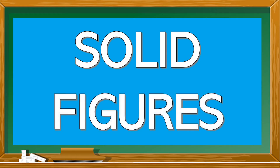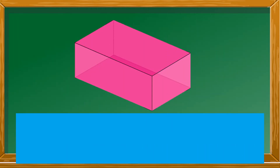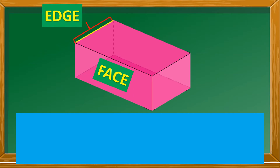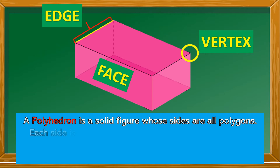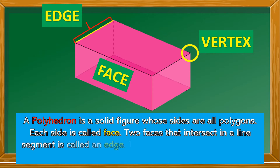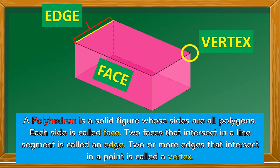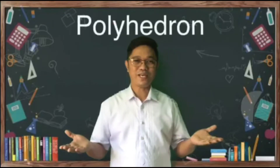Let's try to find out what the different kinds of solid figures are. A polyhedron is a solid figure whose sides are all polygons. Each side is called a face. Two faces that intersect in a line segment is called an edge. Two or more edges that intersect in a point is called a vertex. There are two kinds of polyhedron.